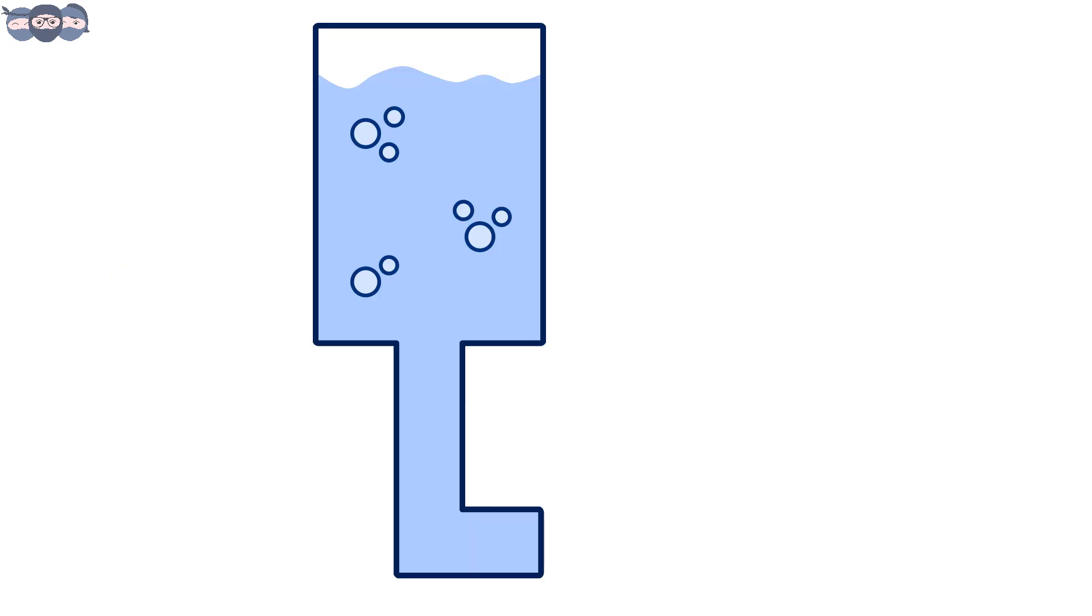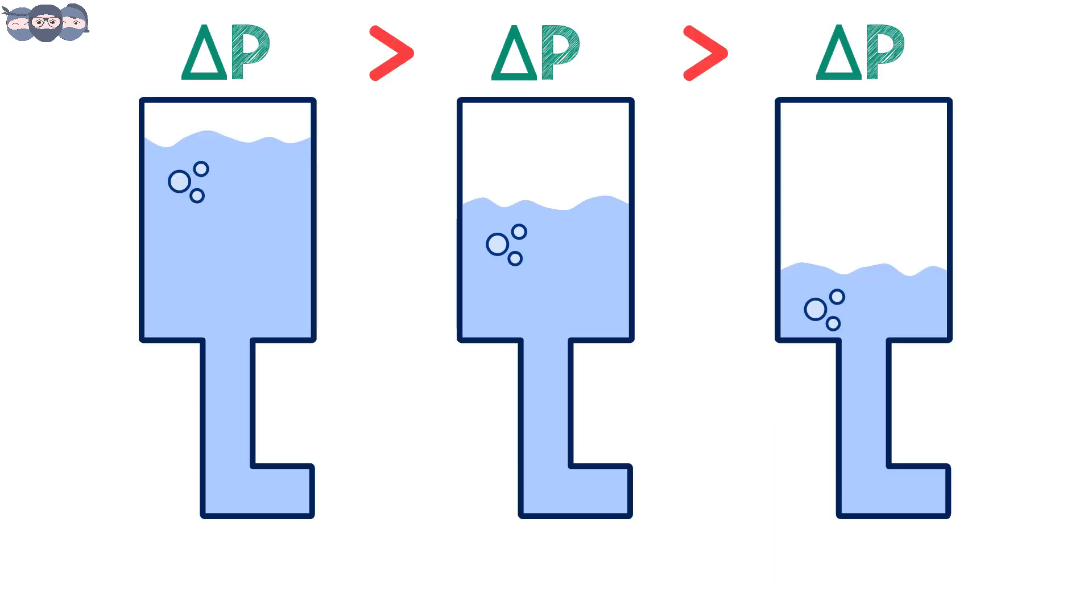Looking at the water tank analogy, current can be said as the flow rate of water. If the pressure difference between the water at two different levels is more, water will have higher flow rate.